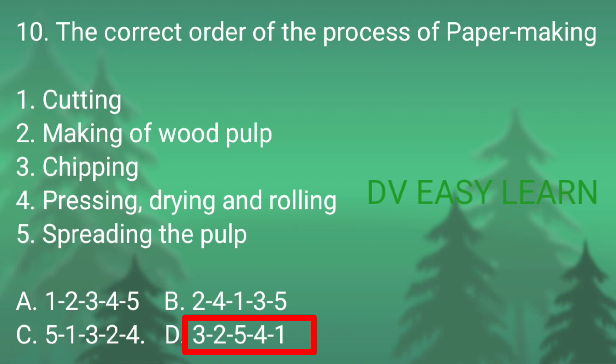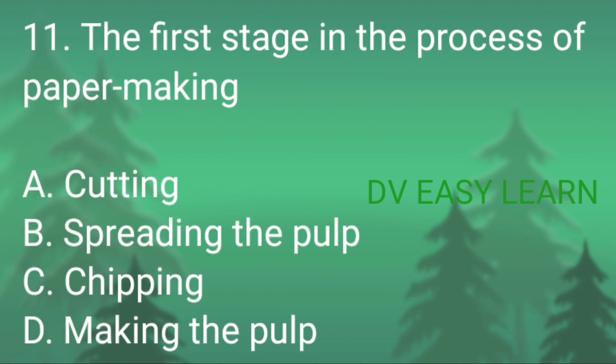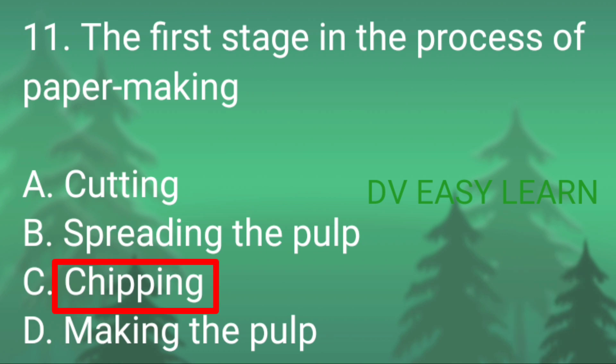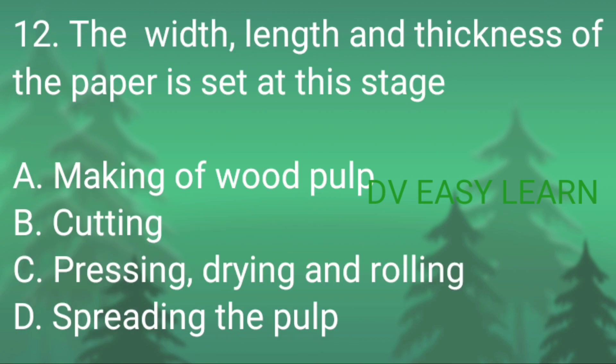Question number 11: the first stage in the process of paper making is — correct answer: chipping. Question number 12: the width, length and thickness of a paper is set at which stage —